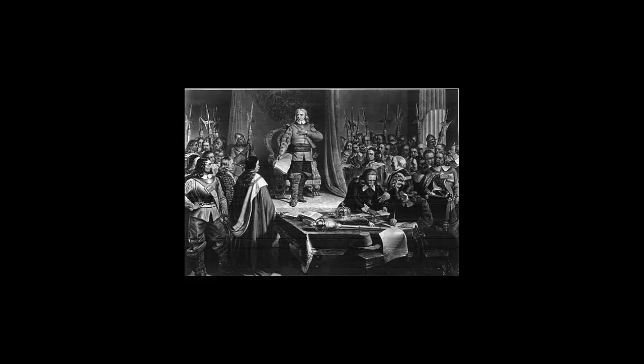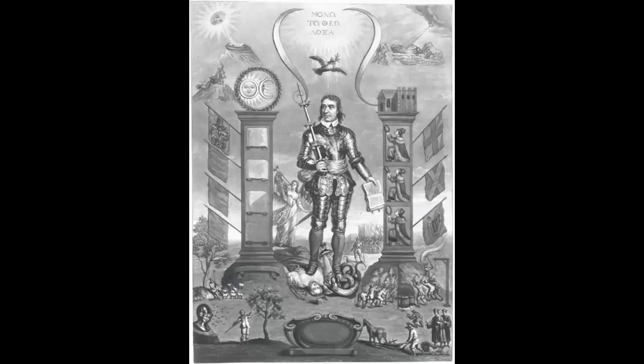Cromwell becomes Lord Protector of England. He does not introduce a Republican form of government — and by Republican, not the Republican Party, but the creation of a republic, which is a government with no king and with elected leaders. Republics are pretty rare until the modern age, when the United States becomes the first to do it in the modern period.